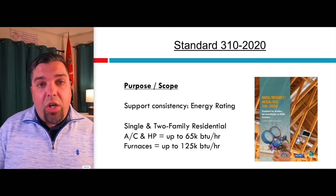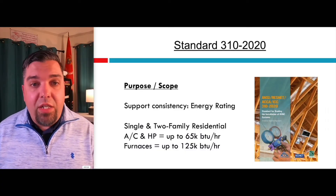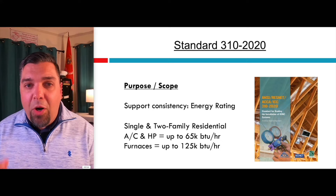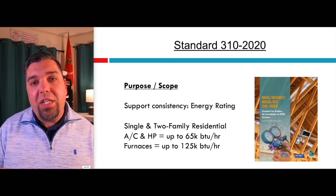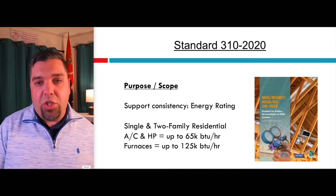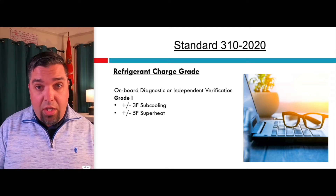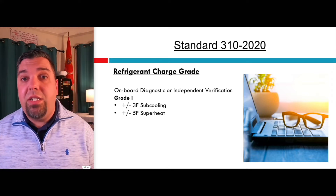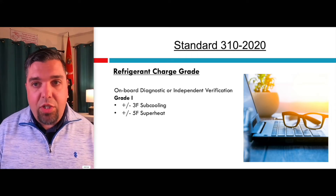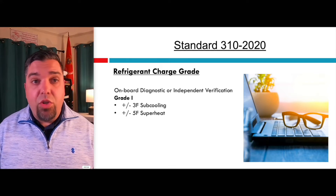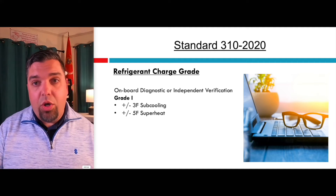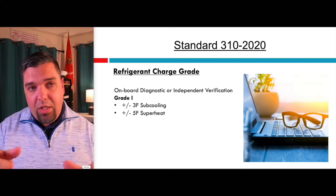This standard just came out in 2020. It evaluates single and two-family residential homes, heat pumps up to six tons, and furnaces up to 125K. The purpose is really to support consistency when doing an energy rating in order to say that the system was designed right and commissioned correctly. If you're going to do superheat and subcooling, and you have onboard diagnostics or get independent verification, that's a Grade 1 — the best you can get for refrigerant charge under that rating. You can do everything we just talked about, set everything up, have a third party come out and do the testing, or print it off if you have onboard diagnostics.